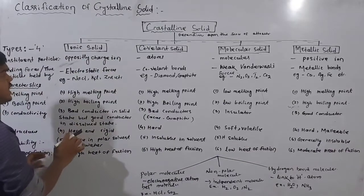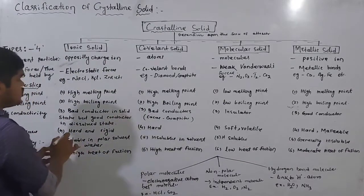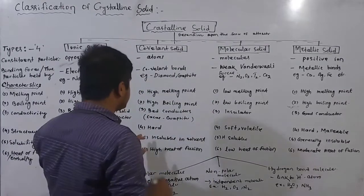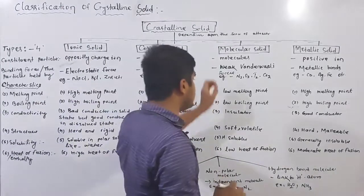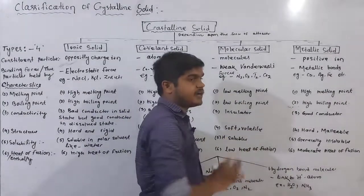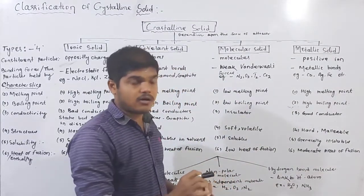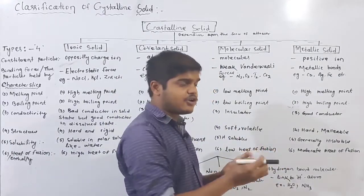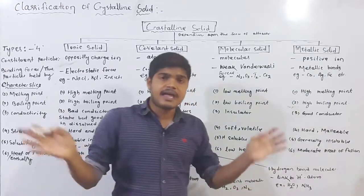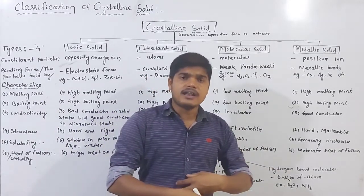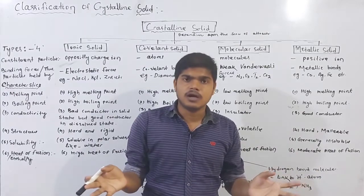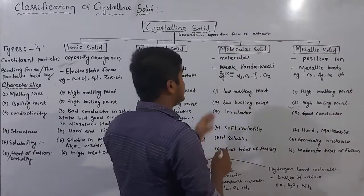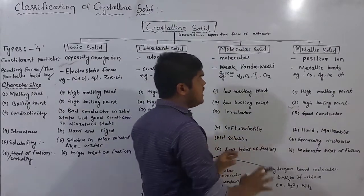Structure: ionic solid structure is hard and rigid. Covalent solid structure is also hard. Molecular solid structure is soft and volatile. Volatile means the substance evaporates easily under environmental conditions.